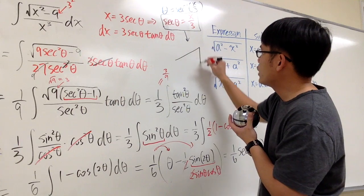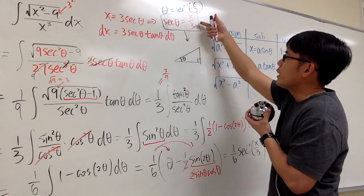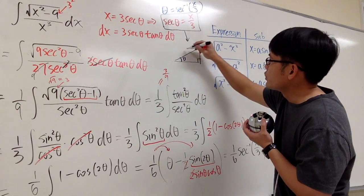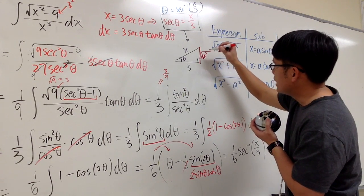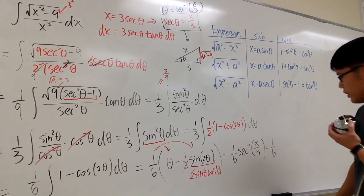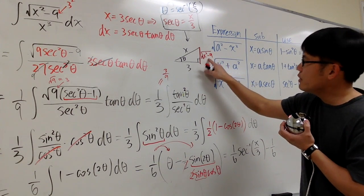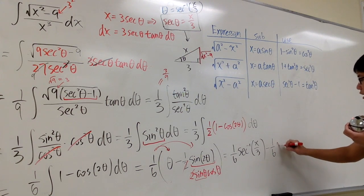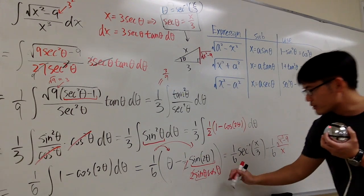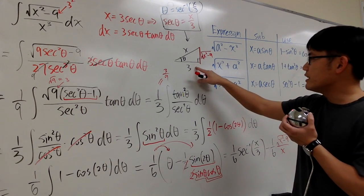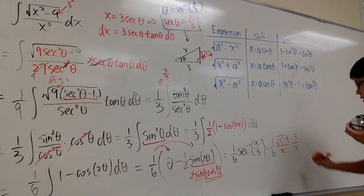To find sine theta and cosine theta we draw a right triangle. Since secant theta equals x over 3, which is hypotenuse over adjacent, the hypotenuse is x and the adjacent side is 3. Using the Pythagorean theorem, the opposite side is the square root of x squared minus 9. So sine theta equals square root of x squared minus 9 over x, and cosine theta equals 3 over x.